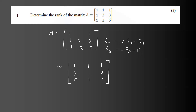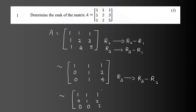We continue with row operations. The third row has non-zero elements. After applying further transformations, the matrix is reduced and we can count the non-zero rows.